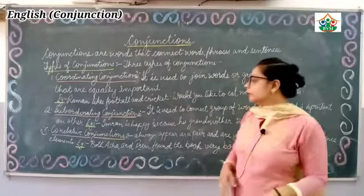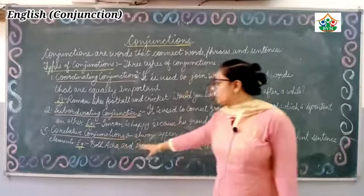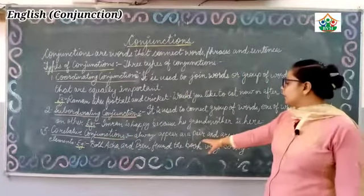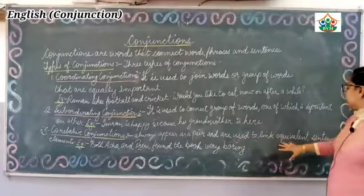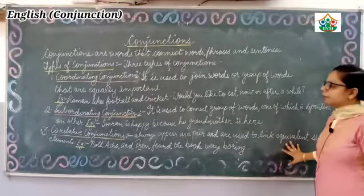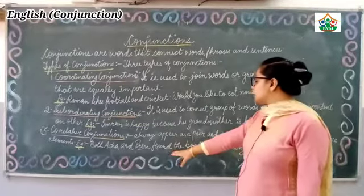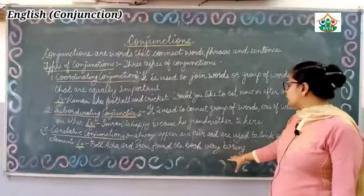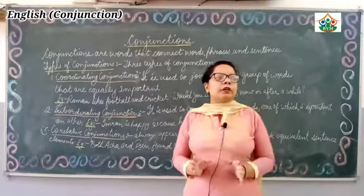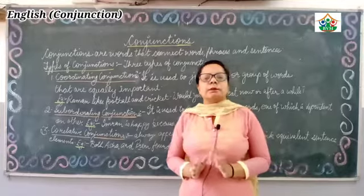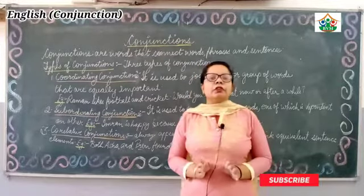The next and last type is correlative conjunctions. Correlative conjunctions always appear as a pair and are used to link equivalent sentence elements. For example: 'Both Asha and Prem found the book very boring.' They always appear equally as a pair — these are called correlative conjunctions.